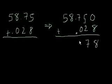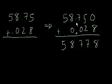5 plus 2 is 7. 7 plus 0 is 7. 8 plus blank space is 8. And we could have had a 0 there, and it would have been the same thing. Had the leading 0, we wouldn't have given someone the wrong amount of medicine. 5 plus blank space is 5. And we just drop down that decimal point. And we're done.